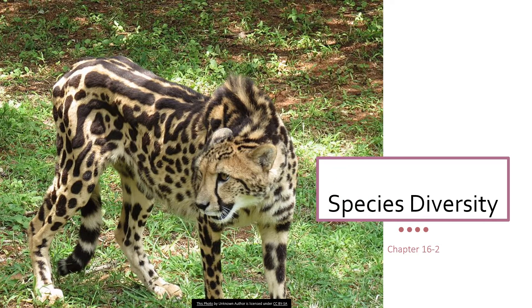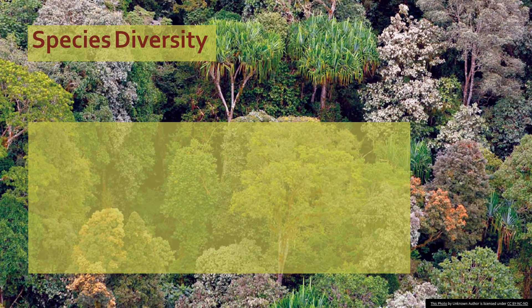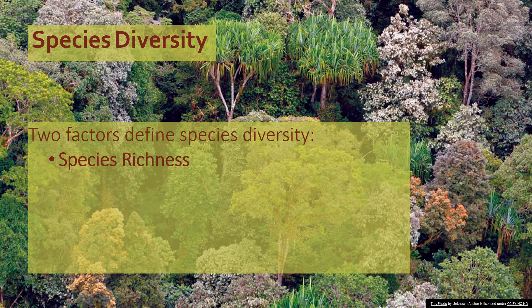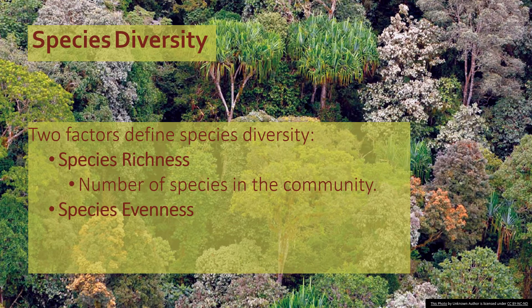We're going to be talking about species diversity today. Species diversity is one way of measuring diversity in an ecosystem. You could have genetic diversity, like this beautiful genetically different form of the cheetah — the king cheetah — which has stripes instead of spots. We're going to talk about ways of measuring species diversity, following chapter 16 in the textbook. There are two important factors for defining species diversity: species richness, which is the number of species, and species evenness, which is the relative abundance of those different species across the community.